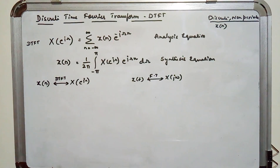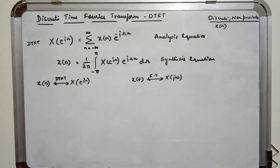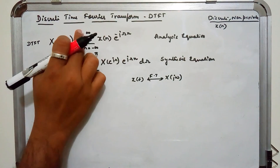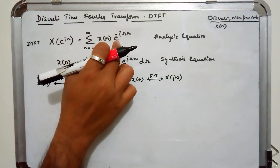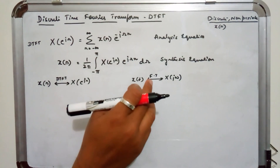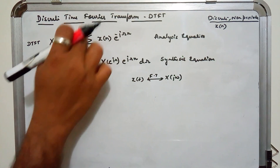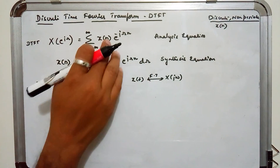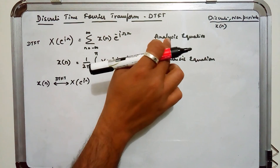This is the equation to find the DTFT of a discrete time signal X[n], which is obtained by summing X[n] from minus infinity to infinity and multiplying by the exponential e^(−jωn). This is similar to CTFT where you had e^(−jωt), but summation replaces integration. This equation for finding the Fourier transform of a discrete time signal is called the analysis equation.